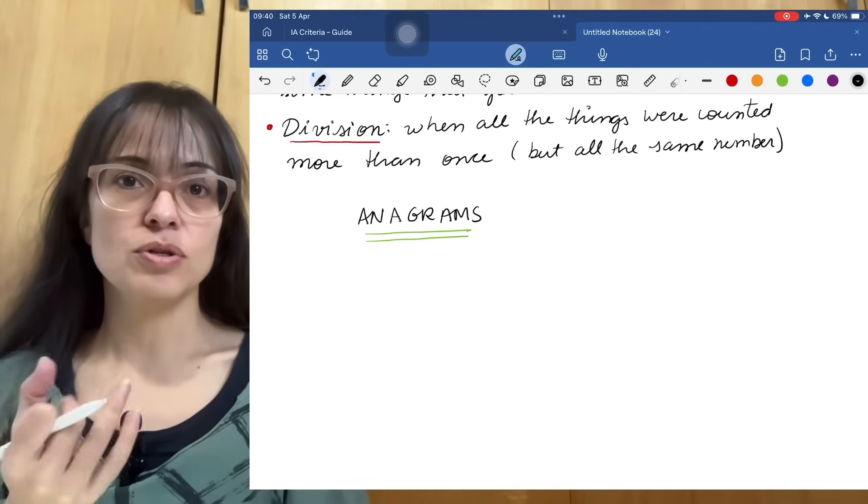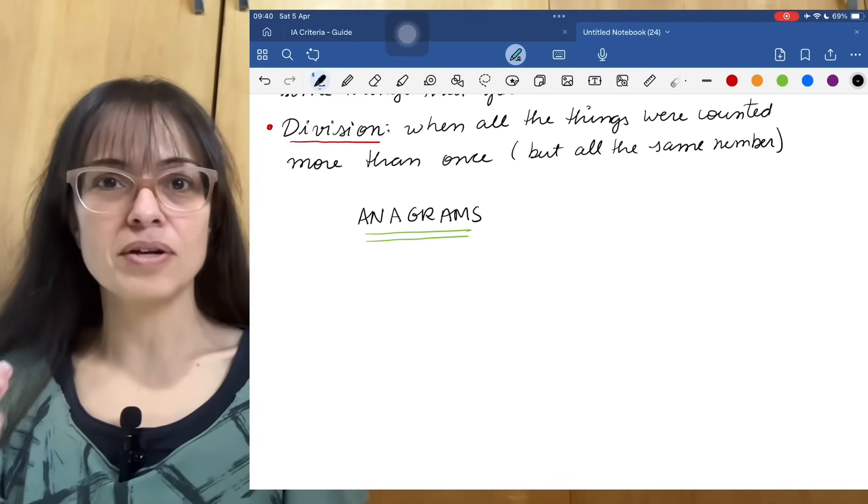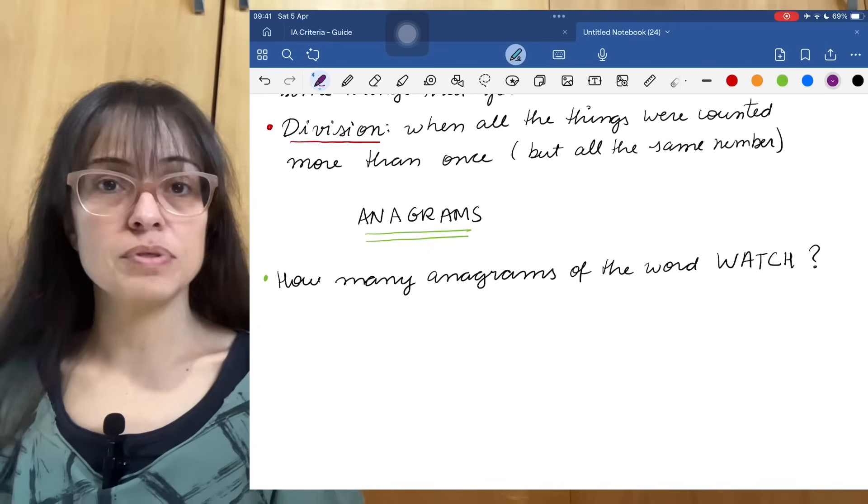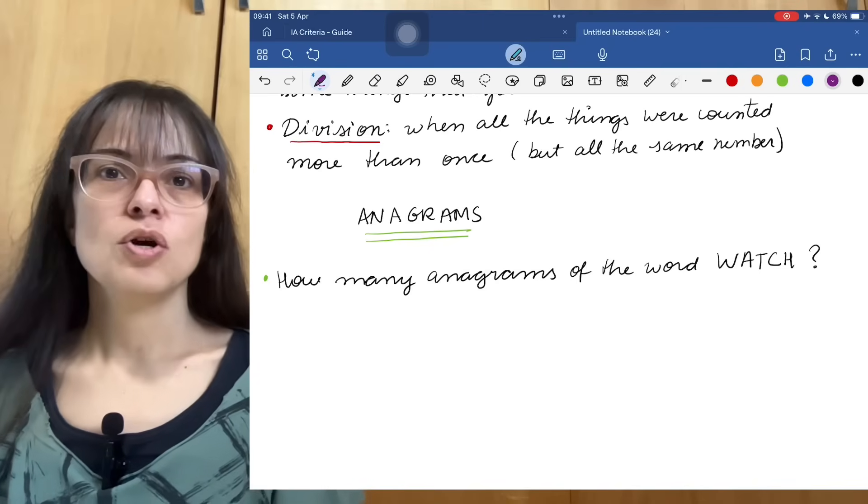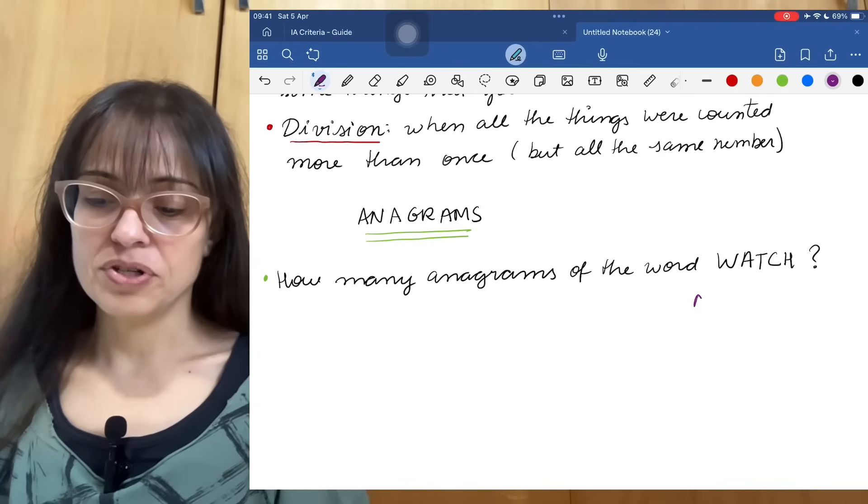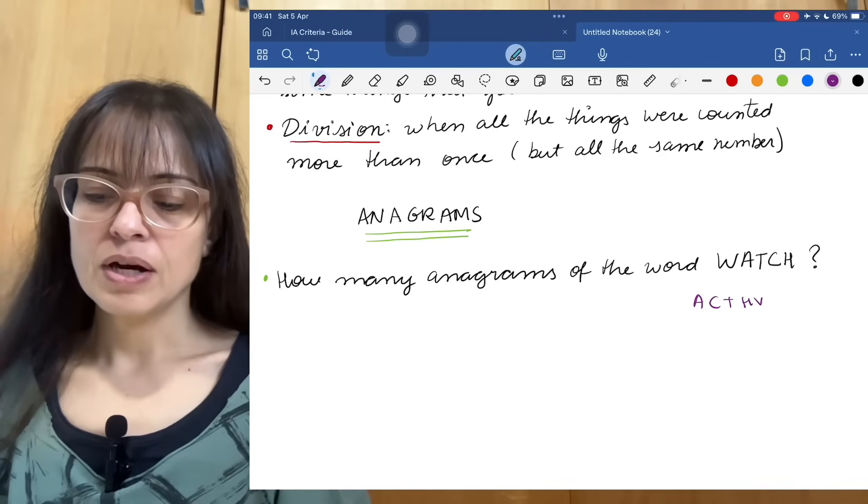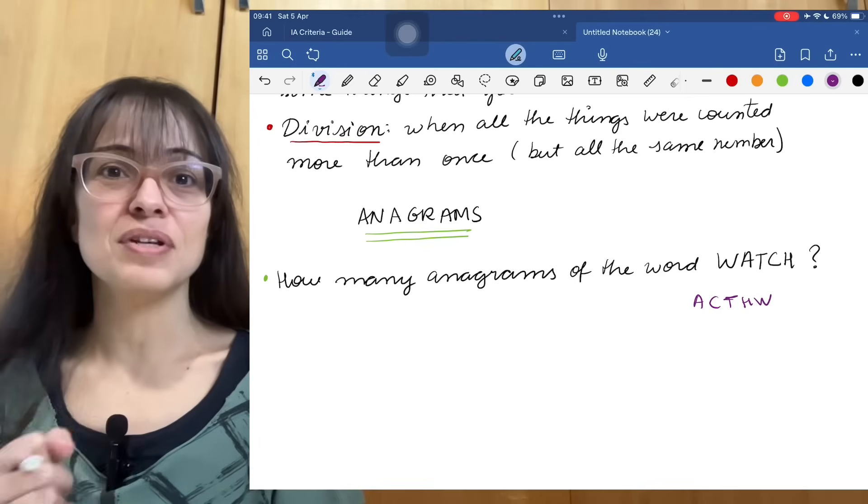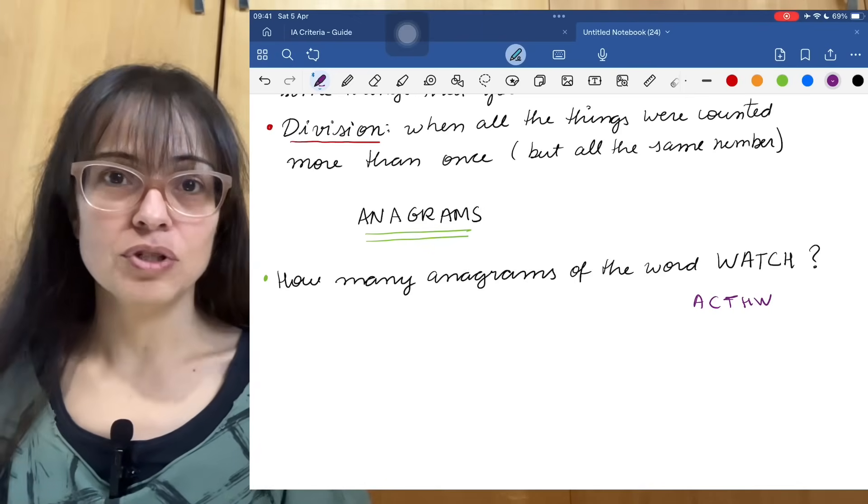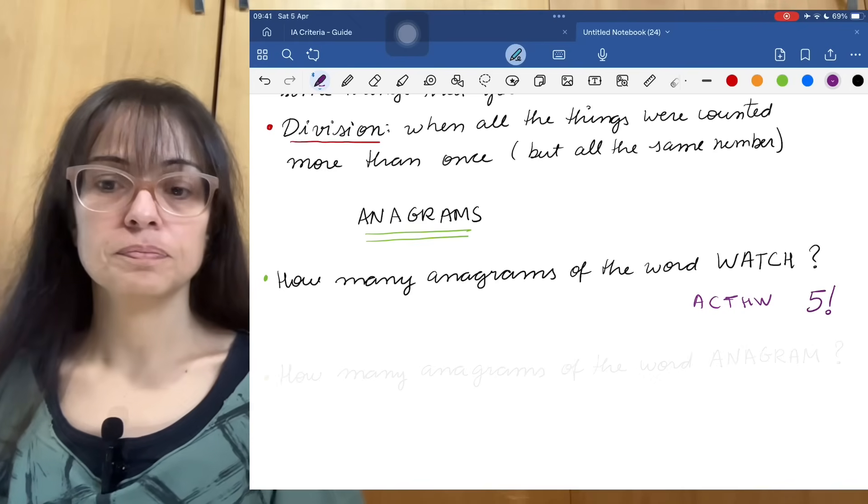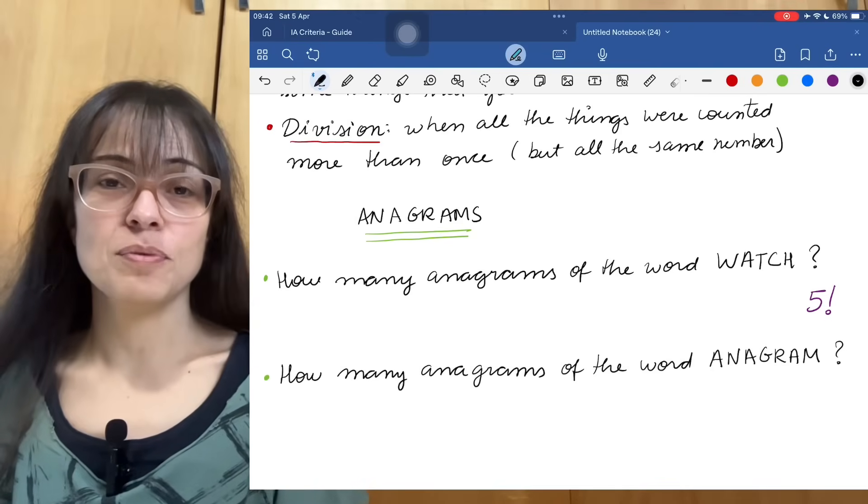An anagram is when you take a word and you scramble the letters. So the same letters, but you put them in a different order. So for example, how many anagrams are there of the word watch? Well, watch has five letters, and you want to put them in different orders. How many different ways can we put five things in order is already one of our shortcuts. So the answer here is going to be five factorial.